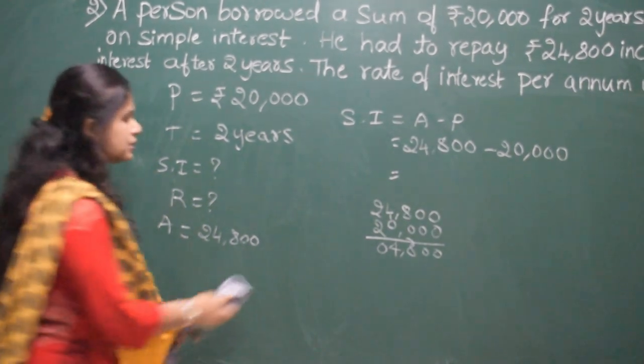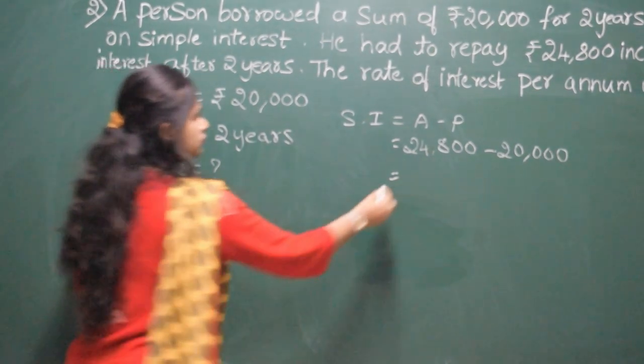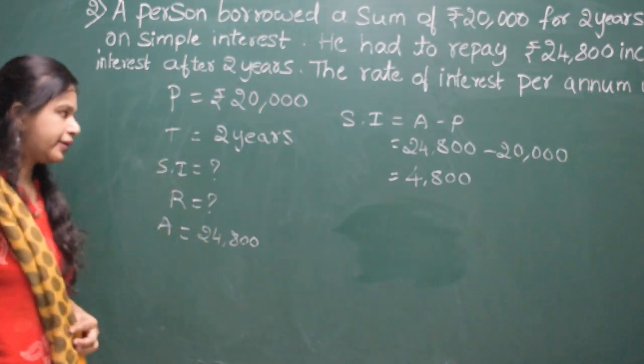Here you have got 4,800 is the simple interest. Now we find the rate.